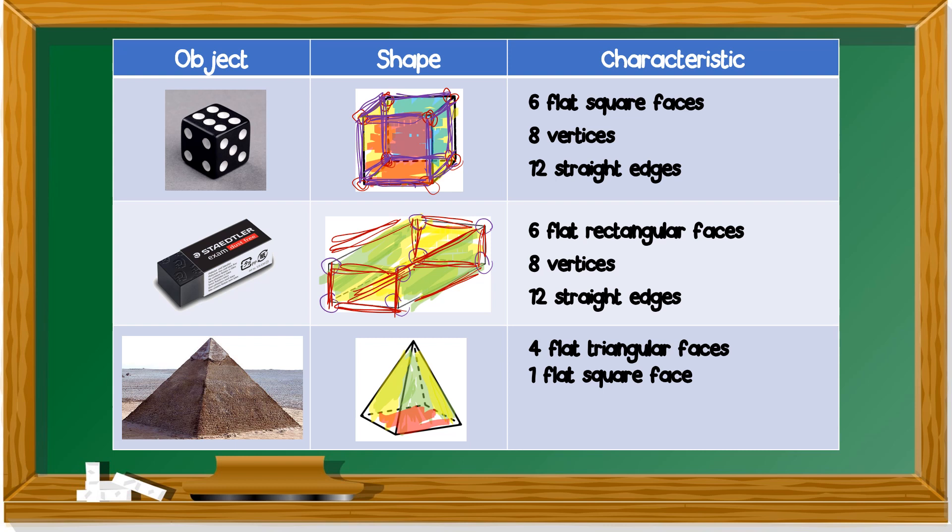How many vertices? One, two, three, four, five. Five vertices. How about straight edges? One, two, three, four, five, six, seven, eight. Eight straight edges.